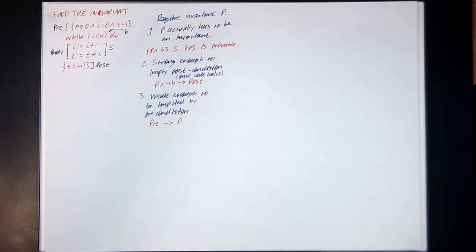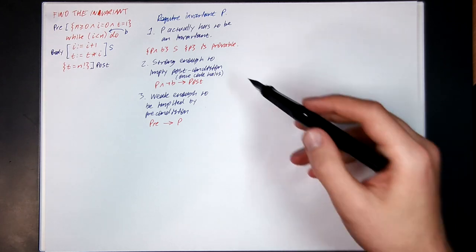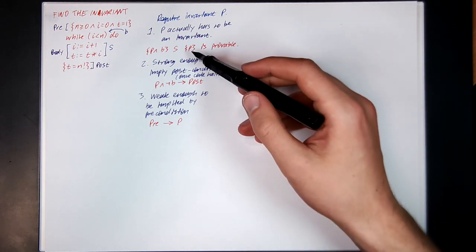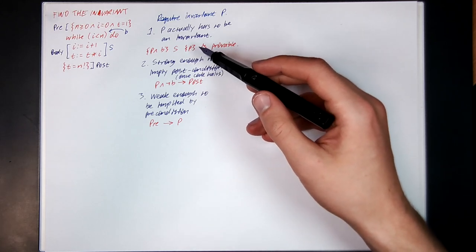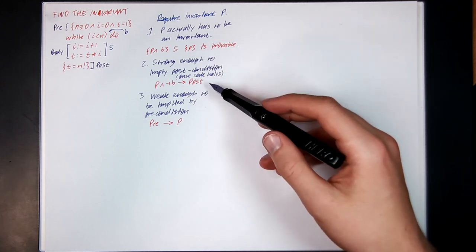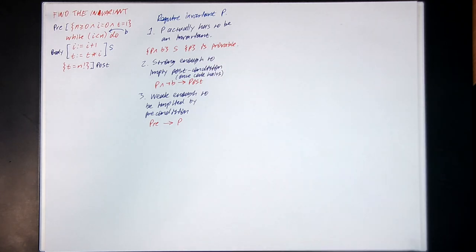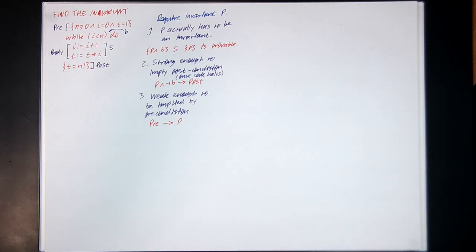You need these three things because if you don't, when you try to do the proof, you'll find that either you can't actually prove this to use the while rule, or you won't be able to use precondition strengthening, or you won't be able to use postcondition weakening. You need all three of these things.